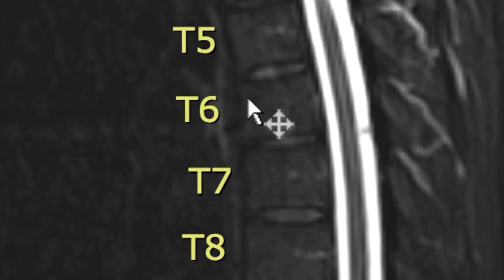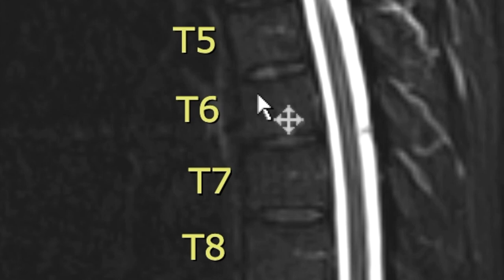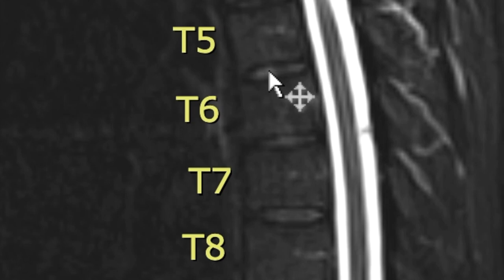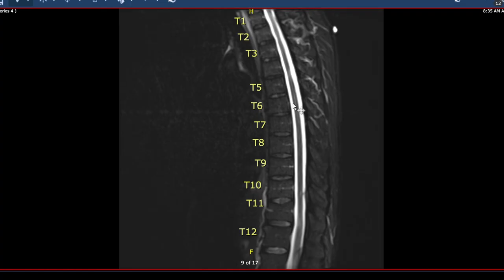If you notice in between the vertebral bodies, you see these intervertebral discs. If you've heard of someone having a bulging disc or a slipped disc, basically this spongy thing squirts out and pushes on the spinal cord.